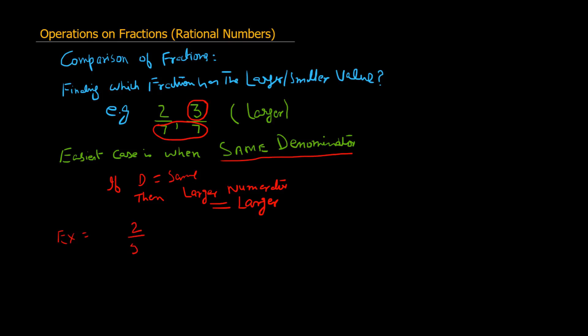We have 2 divided by 5. Which one is larger? If the denominators are not the same, we have to make the denominator the same. We use the concept of equivalent fractions, which we studied earlier. Because if we can make the denominators the same, then whichever fraction has the larger numerator will be larger. The easiest way is to start with the fraction having the smaller denominator.